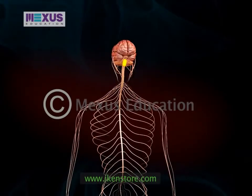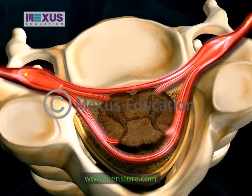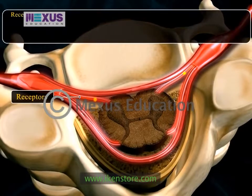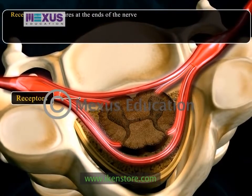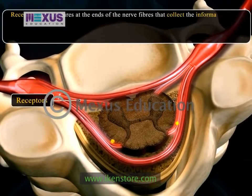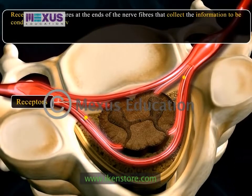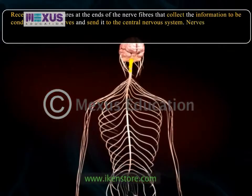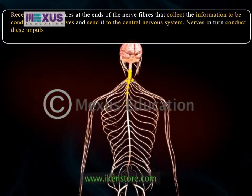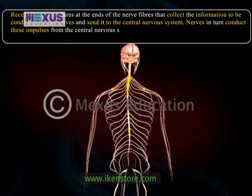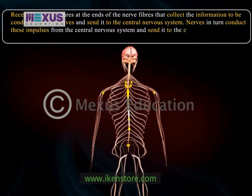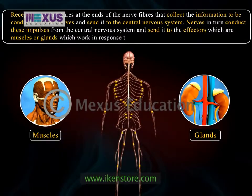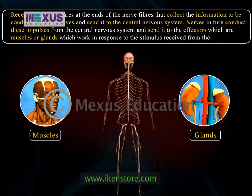There are two structures present in nerves: receptors and effectors. Receptors are structures at the ends of the nerve fibers that collect the information to be conducted by the nerves and send it to the central nervous system. Nerves in turn conduct these impulses from the central nervous system and send them to the effectors, which are muscles or glands that work in response to the stimulus received from the brain.